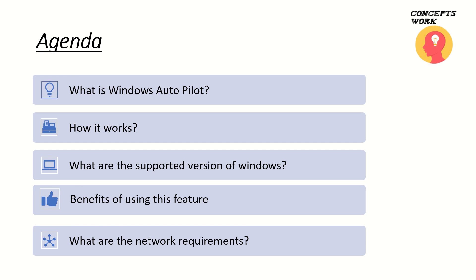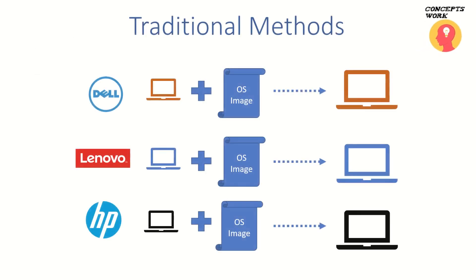Before we discuss how Windows Autopilot works, let's step back and understand what we were doing traditionally — processes still followed in large-scale enterprises. Starting from procurement itself: we contact different OEM providers to get machines with different hardware configurations. Every enterprise has a security and compliance standard requiring a specific build, so we get those machines imaged or re-imaged with the specific OS as per compliance standards.